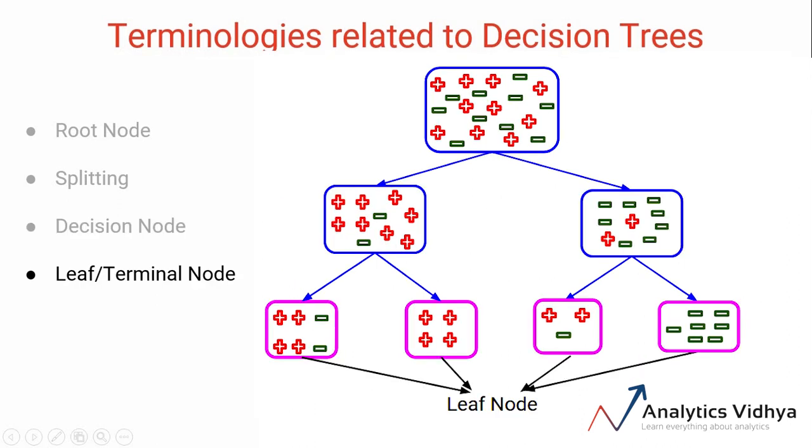Now the nodes which do not split further are called the leaf or the terminal nodes. In our example, these four nodes are the terminal nodes since they're not splitting any further.